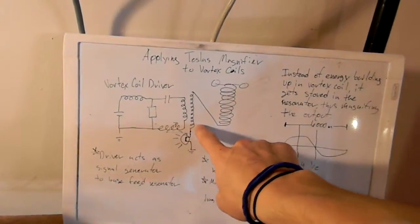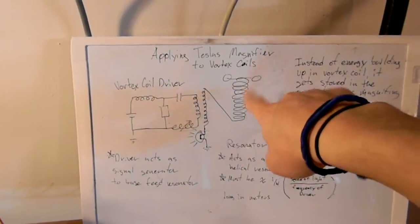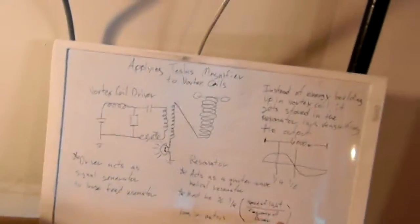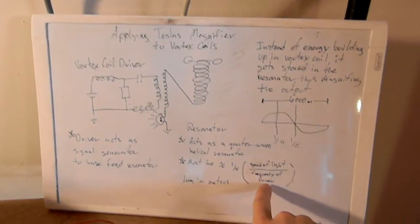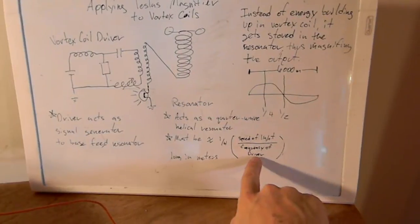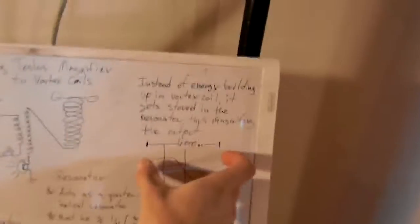But when you take this frequency and you give it a physical structure to vibrate with, if you take the speed of light and divide it by the frequency of the driver, 50 kilohertz, you get the wavelength. The wavelength is 6,000 meters.